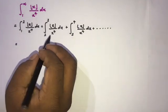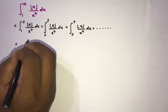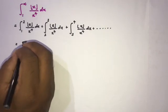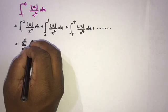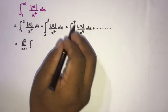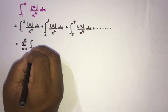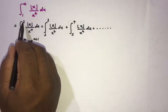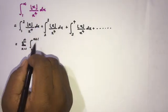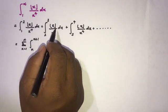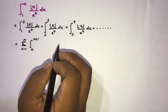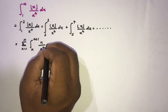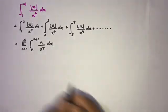Since we have an infinite sum, we can write this using sigma notation: the sum from n equals one to infinity of the integral from n to n+1 of floor(x)/x⁴ dx. On the interval [n, n+1], the floor function equals n, so this becomes n/x⁴.